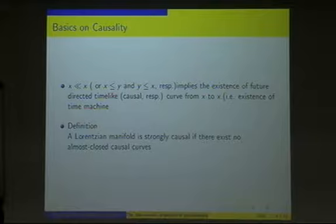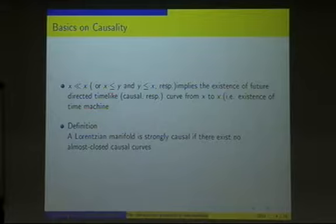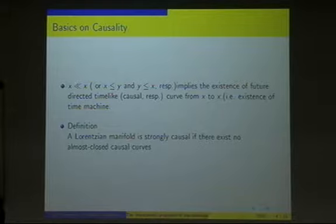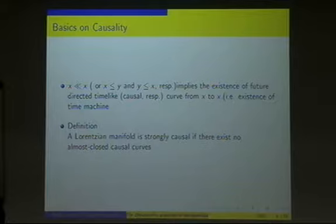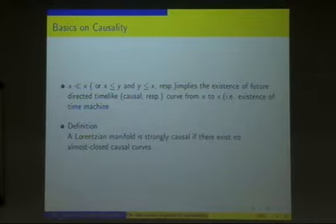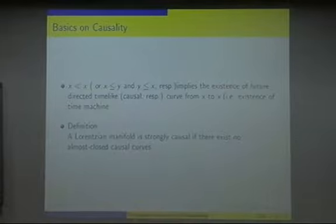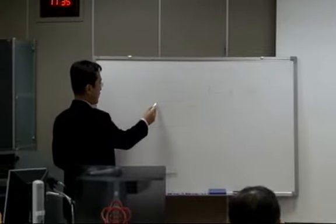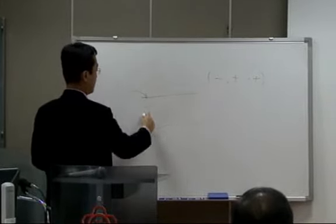Lorentzian geometry also wants to discard this case because some topological defects occur. We need one definition: we say that a Lorentzian manifold is strongly causal if there exist no almost closed causal curves. It turns out that when the manifold is strongly causal, we can define a new topology using this causal relation, and this topology coincides with the given manifold topology.